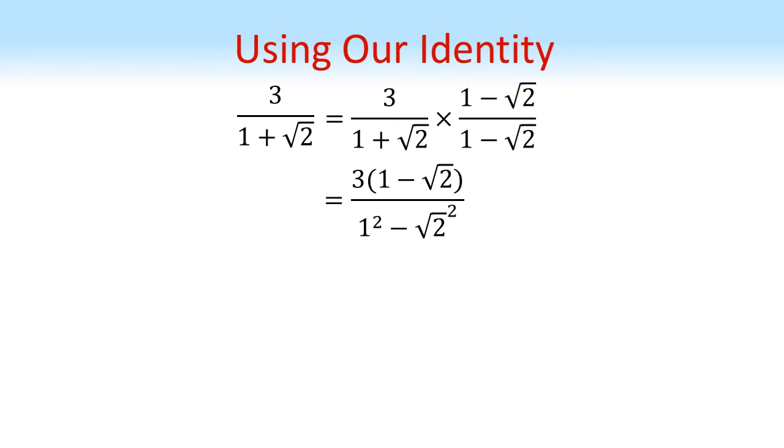On the top we get three lots of 1 minus root 2, but on the bottom our difference of two squares rule tells us that we're going to get 1 squared minus root 2 squared.